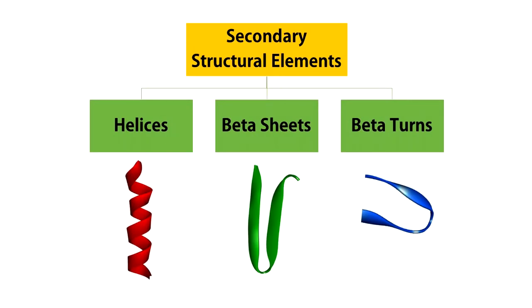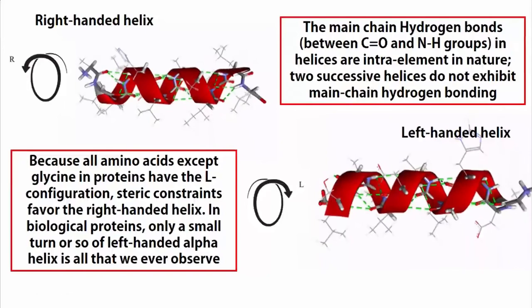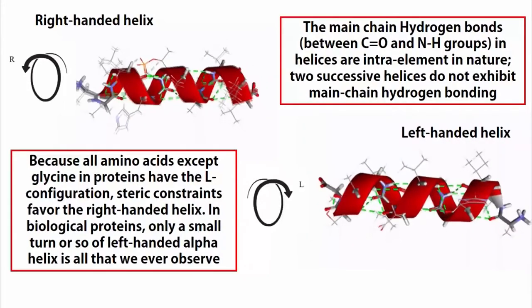Let us start with helices. If a polypeptide chain is twisted by the same amount about each of its C-alpha atoms, it assumes a helical conformation.